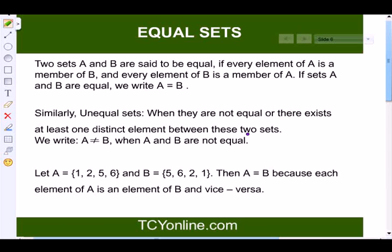Now the next we have is equal sets. Two sets A and B are said to be equal if every element of A is a member of B, and every element of B is a member of A. So if sets A and B are equal, we write down like this. Similarly, let's see what is an unequal set. When they are not equal or there exists at least one distinct element between these two sets, then we say that it is an unequal set. And we write down A is not equal to B when A and B are not equal.